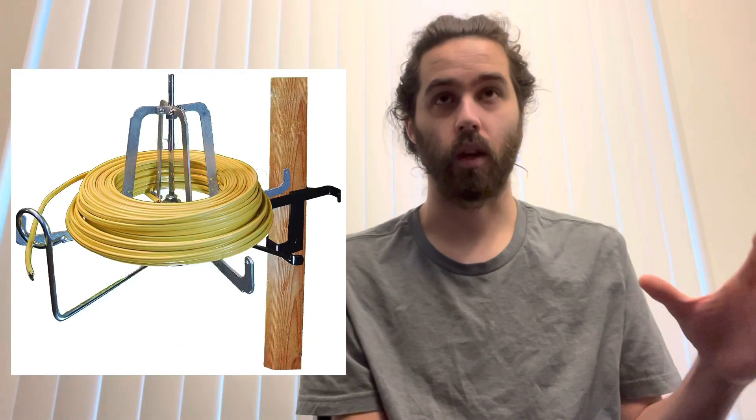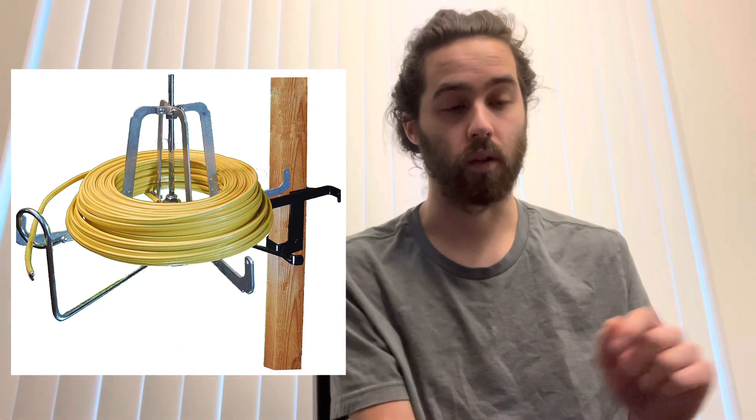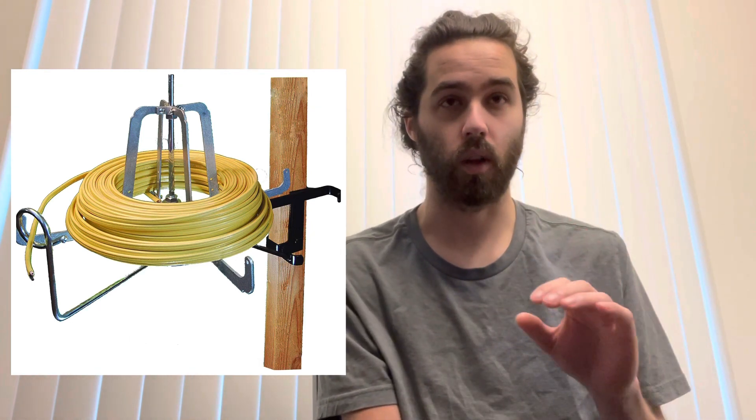Moving on, we've got a spinner, which is just a wire reel to put your wire on so it spools off. Those can be on a stud or like a circular disc on the ground. Then we've got the whole hog, which is a drill with a long or short drill bit used to drill through the studs in a house to put all your wire inside the walls.